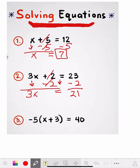What's the opposite of times? Division. That's the opposite. So we want to divide both sides by 3. We divide that side by 3, and what we do to one side, we gotta do to the other side. The 3s cross each other out. The x comes down. So x equals 21 divided by 3, which is 7. That's the answer — x equals 7. I'll box that so the teacher knows my answer is x equals 7.